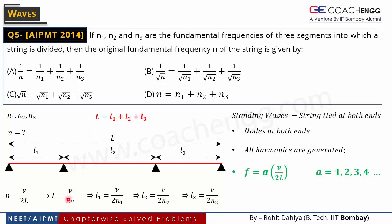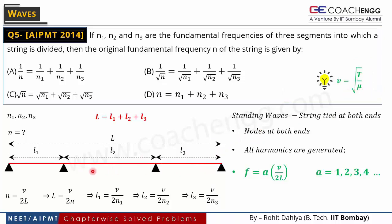The wave speed in the string is √(T/μ), where T is the tension and μ is the mass per unit length. Since this is the same string throughout, the tension and μ are the same in all sections, so the wave speed V is the same everywhere. Cancelling V/2 from both sides gives: 1/N = 1/N1 + 1/N2 + 1/N3.